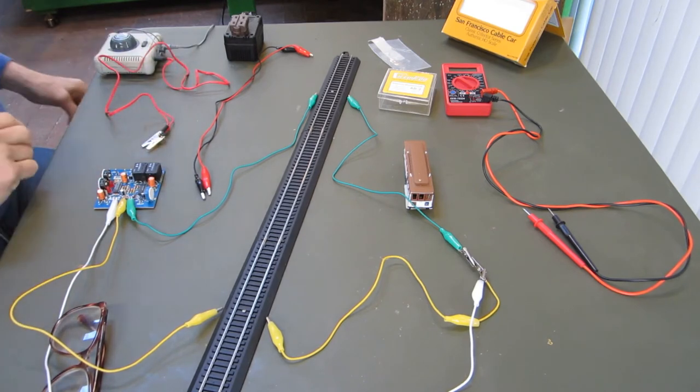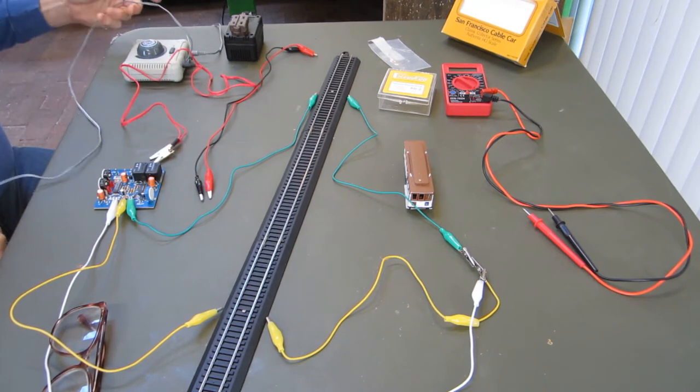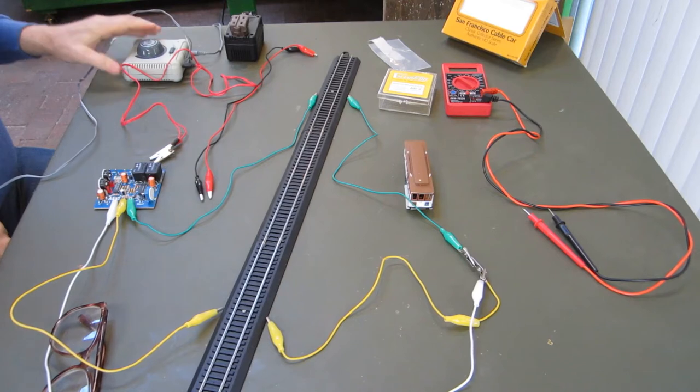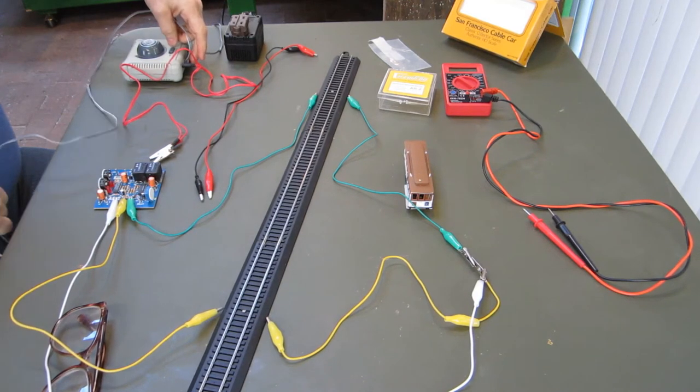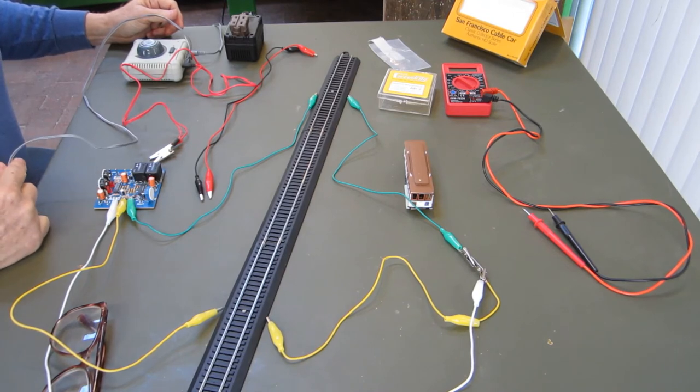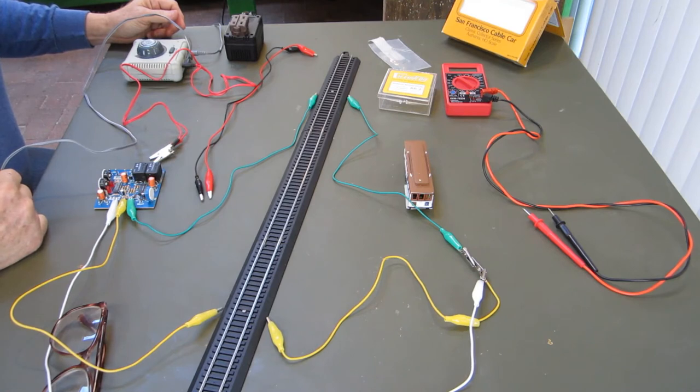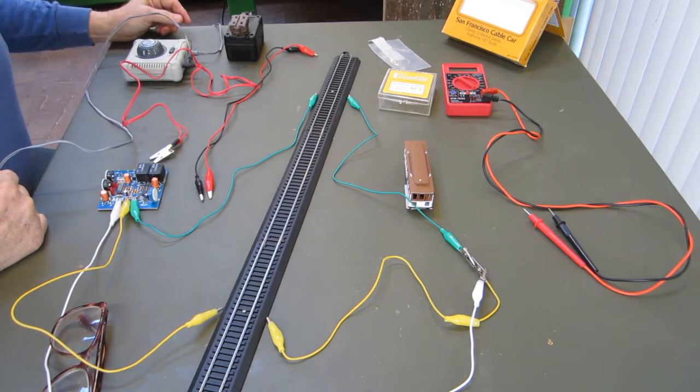Now we'll power the circuit board. As you can see here, I have a simple Bachman controller. I've attached my leads to the constant AC output. It is important to note that it requires 16 volts AC to run the circuit board, but a maximum of 18 volts.